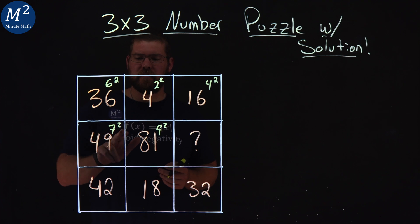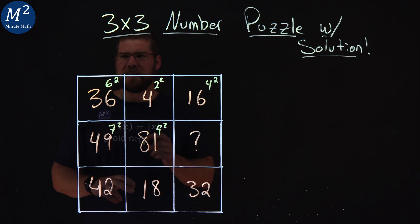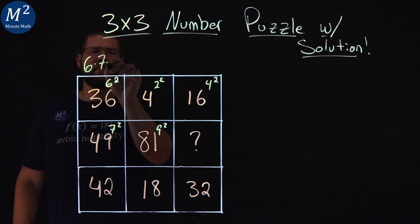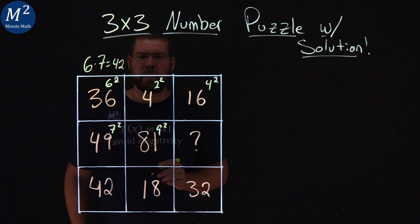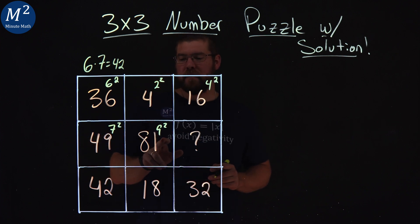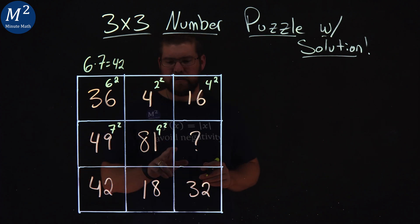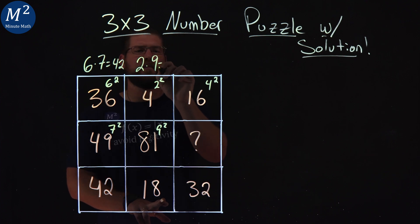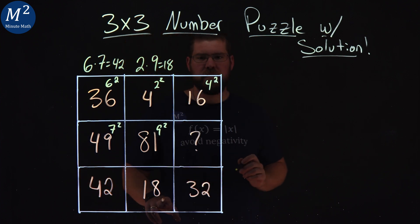We have 6 squared is 36, 7 squared is 49, 42, well that's 6 times 7. 4 squared, or 4 is 2 squared, 81 is 9 squared, 2 times 9 is 18. Looking for patterns here.